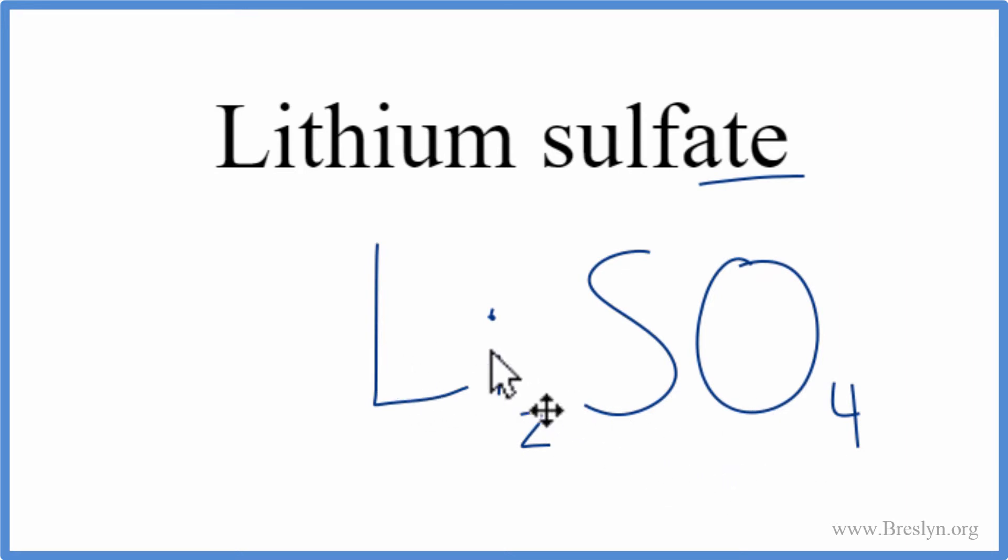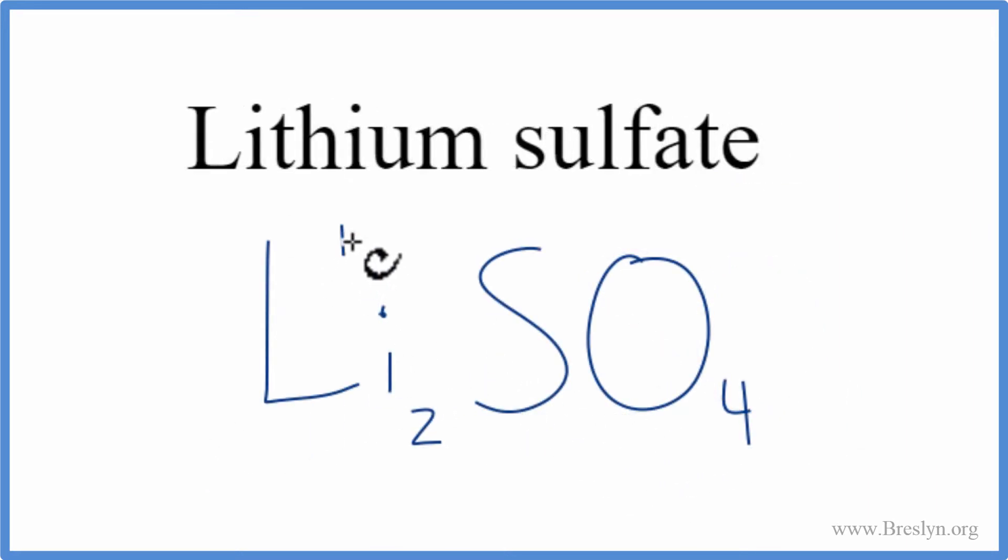Let's check our work. Lithium is one plus because it's in group one on the periodic table. Sulfate is two minus. I have one sulfate ion, one SO4, which gives me one times two minus. That's two minus.